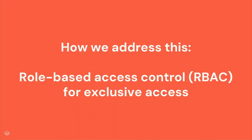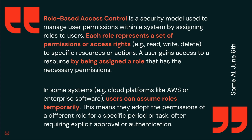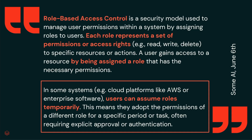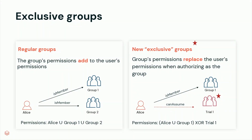So how are we solving that? We're solving that with role-based access control. Role-based access control is a model to manage permissions where each role represents a set of permissions — a container — and users gain access to resources by being assigned to a role. What's interesting is that in some systems, users can assume roles temporarily to gain access to some data and then lose those permissions again. This is exactly what we have used to realize exclusive access.